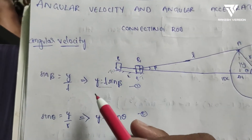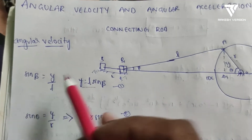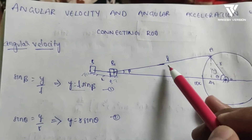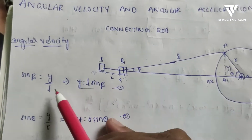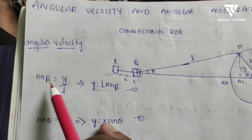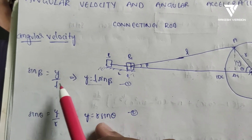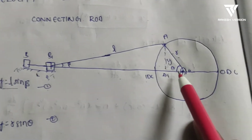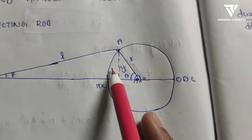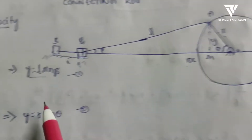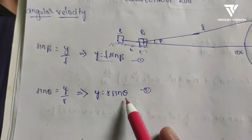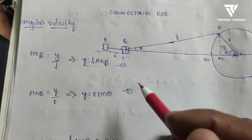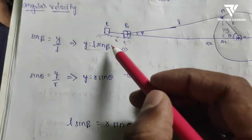First we locate angle β. sin β equals opposite over hypotenuse, that is y/L, so y = L·sin β. Similarly, sin θ = y/R, so y = R·sin θ. This gives us two equations for y that we need to equate for the angular velocity derivation.